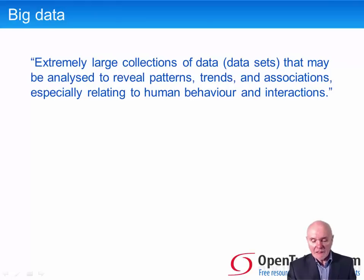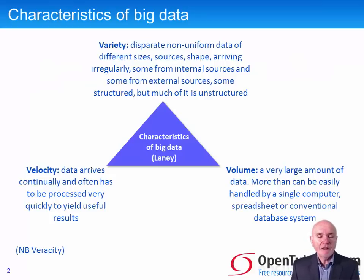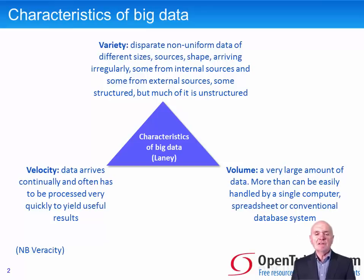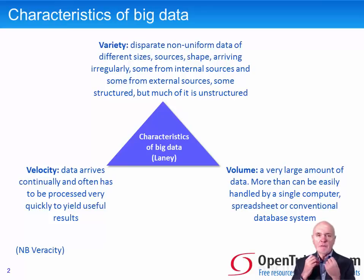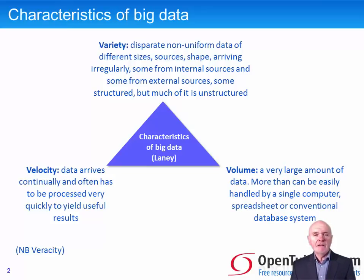What are the characteristics of Big Data? You have to know the idea of the three V's: variety, velocity, and volume. Variety refers to a huge range of different sorts of data coming from different sources — some numerical, some words and descriptions, some graphical, some geographical information about where you've travelled. All of this data has to be held, stored, and then used to produce useful information.